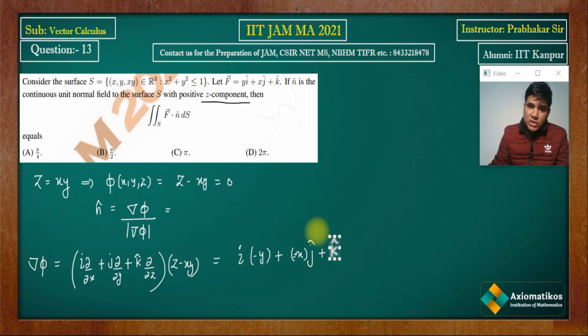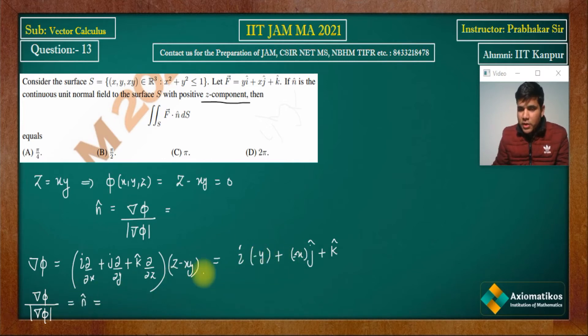This is the normal vector, that means the z component is positive. So now if you have the unit vector, it's time to calculate the magnitude and then divide by the magnitude. So how much will it be? Minus y i minus x j plus k upon under root 1 plus x² plus y².